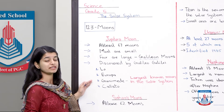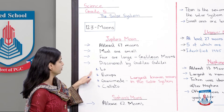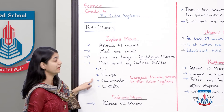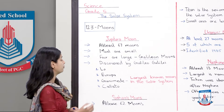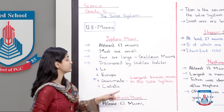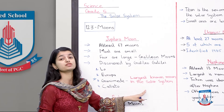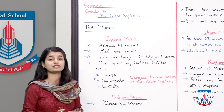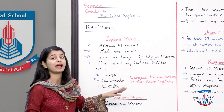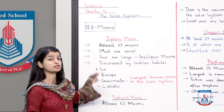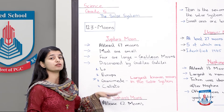Un chaaron moons ke naam jo large moons hain of Jupiter: the first one is Io, the second one is Europa, the third one is Ganymede, and the fourth one is Callisto. In me se important Ganymede is liye hai kyunke it is the largest known moon in the entire solar system. Solar system ka sabse bada moon jo aaj tak dekha gaya hai woh Ganymede hai, and that belongs to Jupiter.